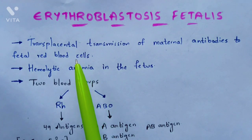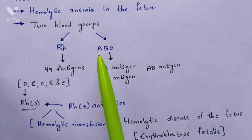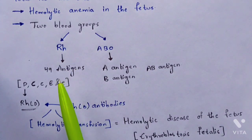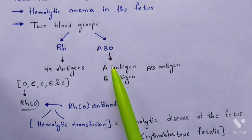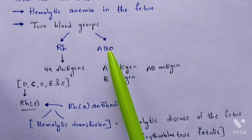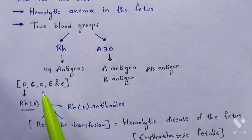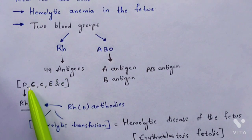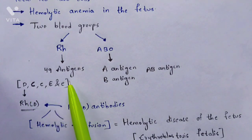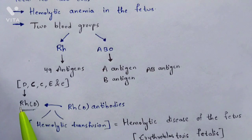To understand this definition deeply, we need to know that there are two types of blood groups in human beings: the Rh blood group type and the ABO blood group type. In the ABO system there are three kinds of antigens — A antigen, B antigen, and AB antigen — while O type has no antigens, only antibodies. In the Rh system there are 49 antigens total, of which five are very important: capital D, capital C, small c, capital E, and small e. Among these, the RhD antigen plays the crucial role in erythroblastosis fetalis.